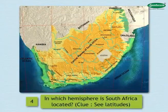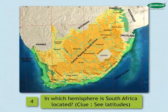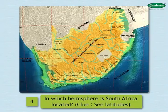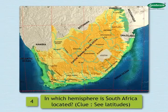4. In which hemisphere is South Africa located? Looking at the latitudes, we can say that South Africa is located in the southern hemisphere.